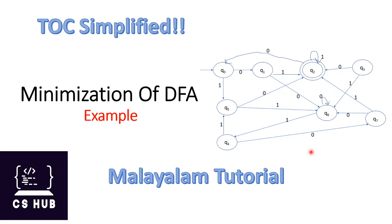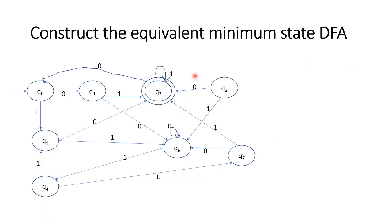This is our question. The first step is to find the unreachable states. We need to get the unreachable states. Let me show how we get them. We have to check Q3.